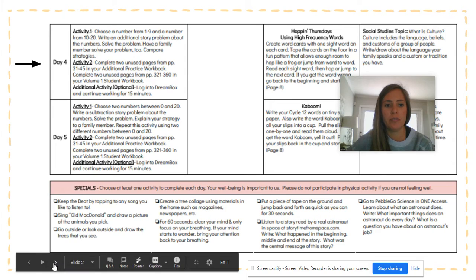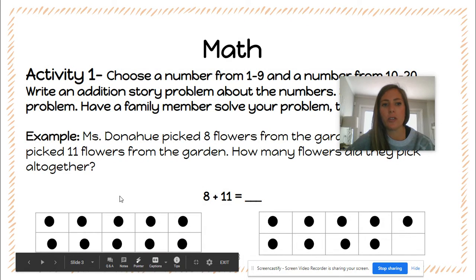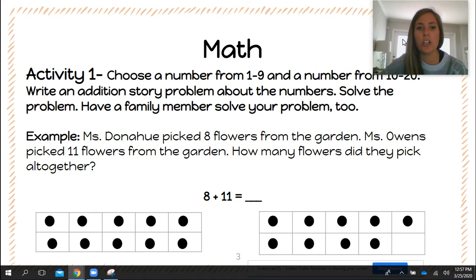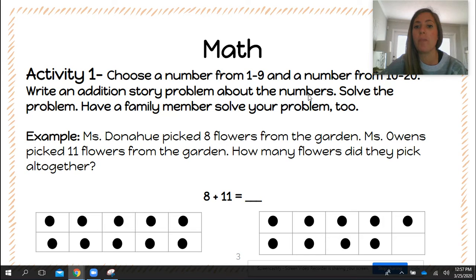The first activity for math: you are going to choose a number from 1 to 9 and a number from 10 to 20. You're going to write an addition story problem about the numbers, solve the problem, and have a family member solve your problem too. I have an example here for you.